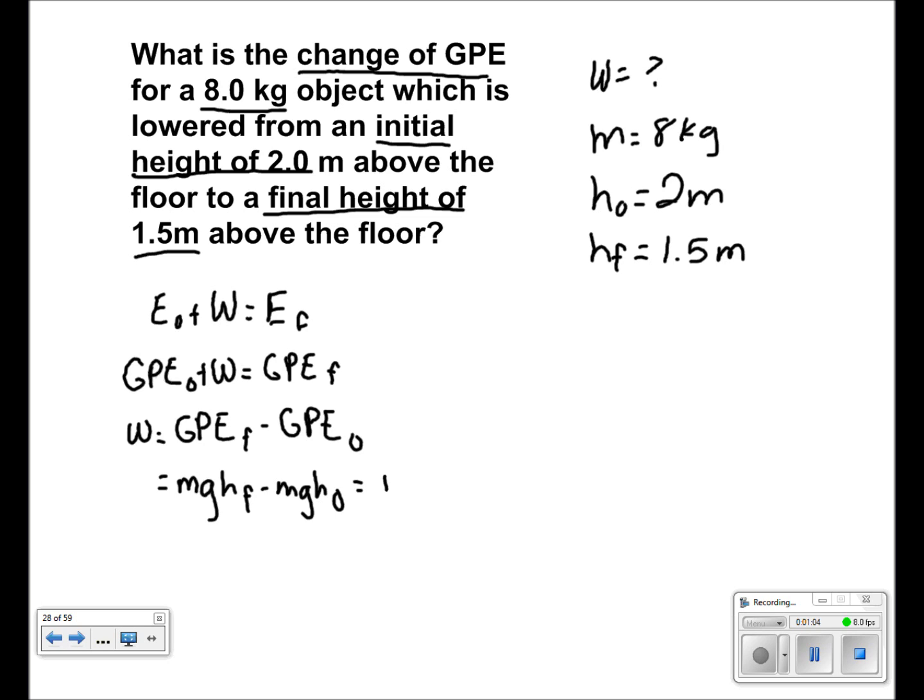Taking out mg, since that does not change, we get that mg times h final minus h initial is equal to work. So work is equal to 8 times 9.8 times 1.5 minus 2. So we get that work is equal to negative 39.2 joules.